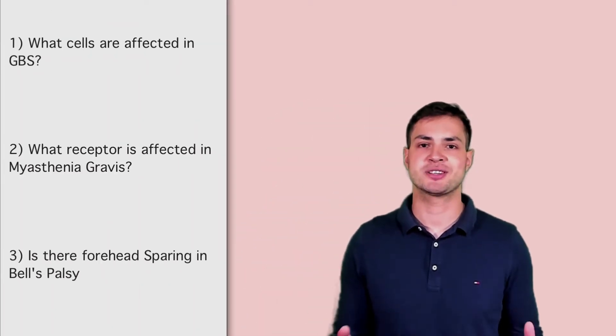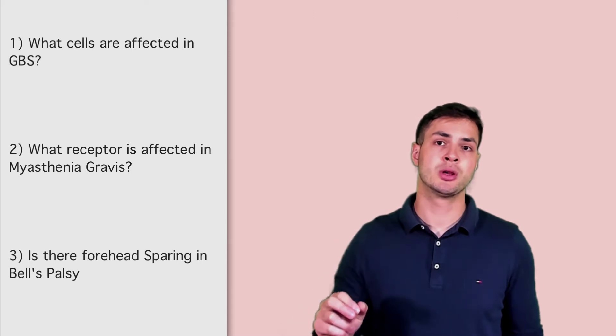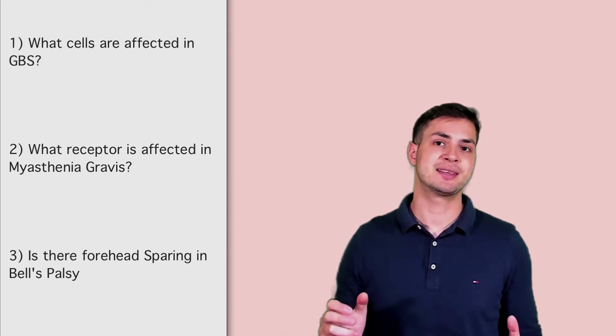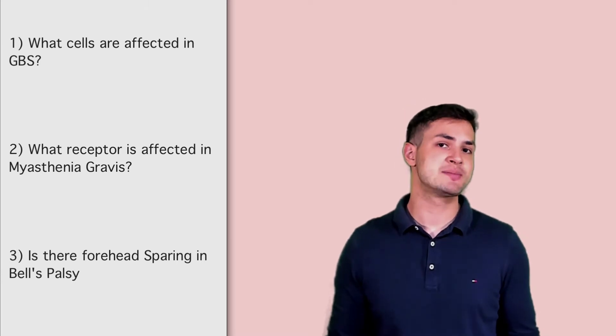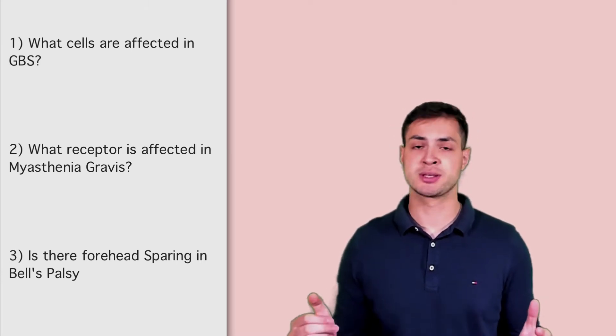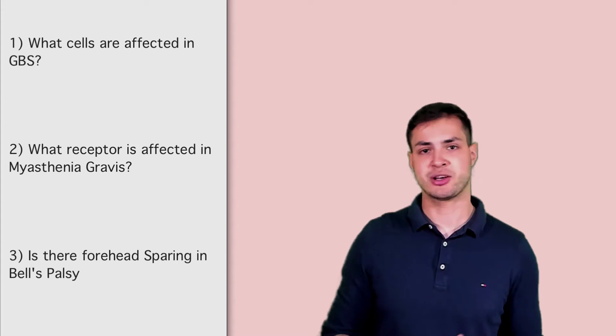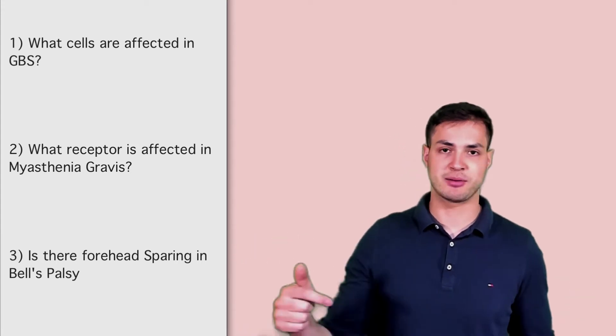Now before we start, we're going to do a three-question warm-up to help us get in the mood. Please pause the video after I've given you those three questions because I'm going to go into the answers straight away. Question number one, what cells are affected in Guillain-Barre syndrome? Question number two, what receptor is affected in myasthenia gravis? And question number three, is there forehead sparing in Bell's palsy or not? Now pause the video, write down your answers and we'll get started right after the break.